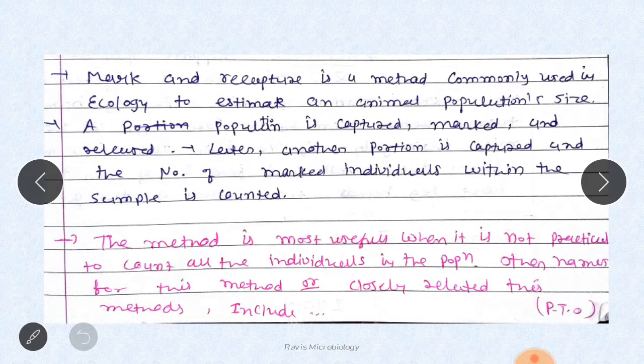Mark-recapture is a method commonly used in ecology to estimate animal population size. A population is captured, marked, and released. Later, another portion is captured and the number of marked individuals within the sample is counted.